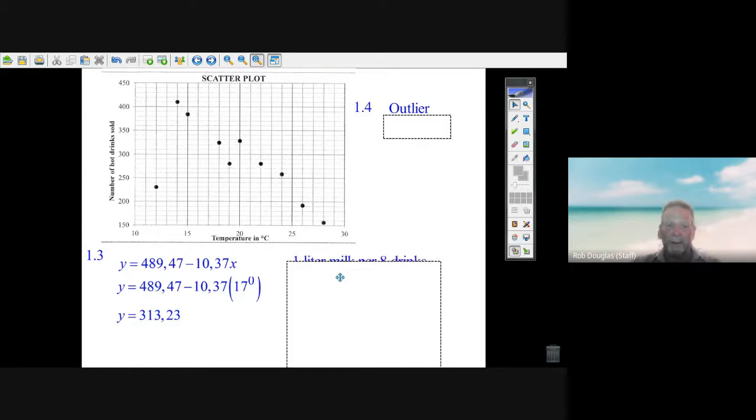They tell you it's one liter of milk for every eight drinks. How many liters am I going to have to buy? Well, you just go 313 divided by 8, and there you've got it: 40 liters. That's what you'd have to buy for that day. You might want to buy 41 or 42 because it's only a prediction - you wouldn't know for sure - but it looks like the answer to that question is 40 liters.